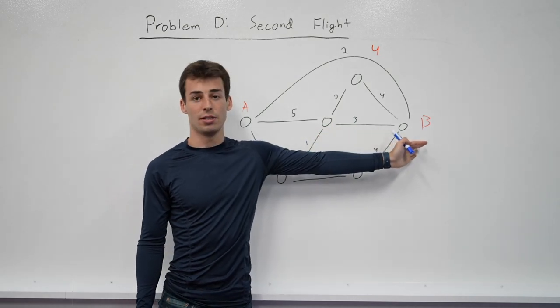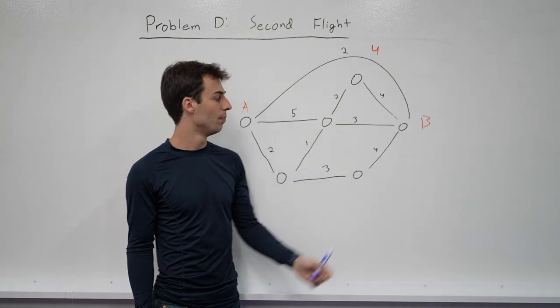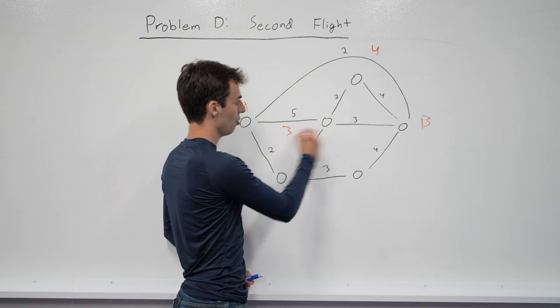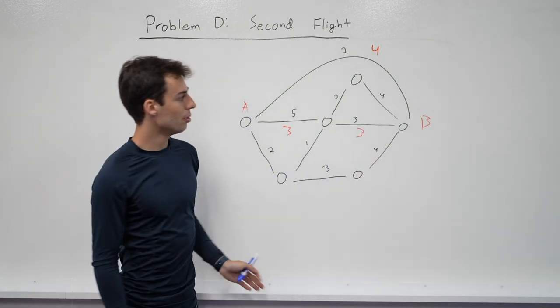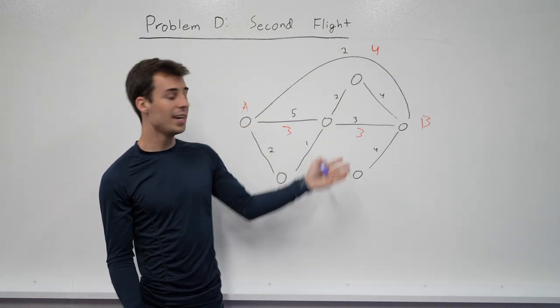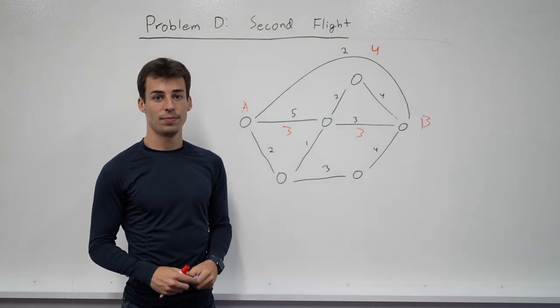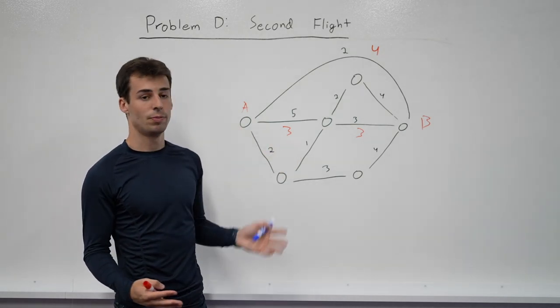Although five can travel along this edge, we're only able to get three across the second edge here. So we can have three travel here and three travel here. In total, seven people will travel from airport A to airport B over the course of a day, and that's the biggest we can get for these two.